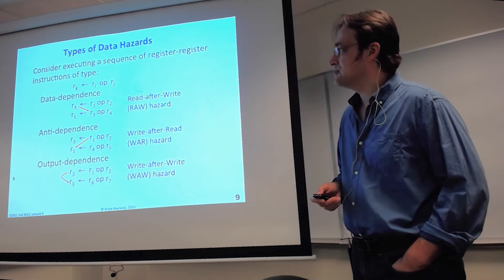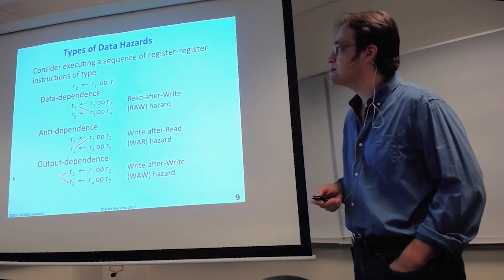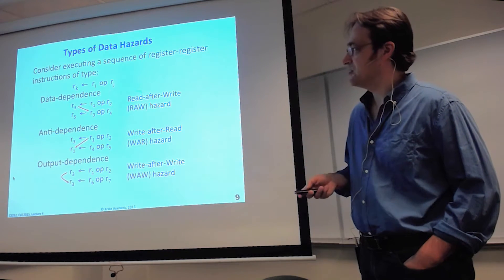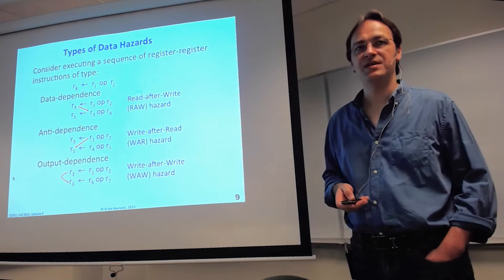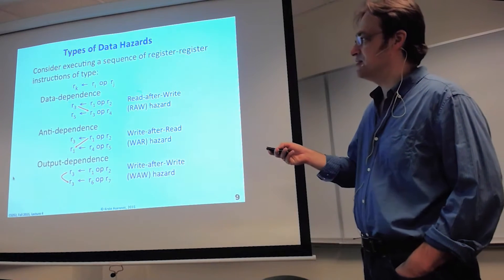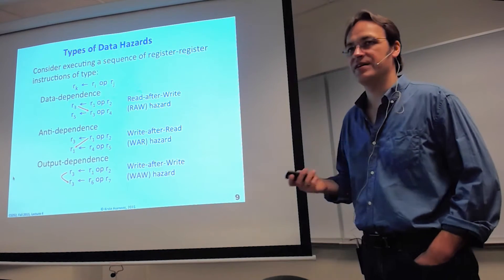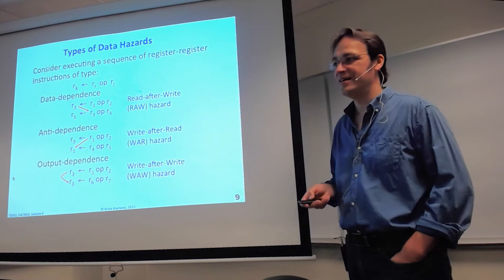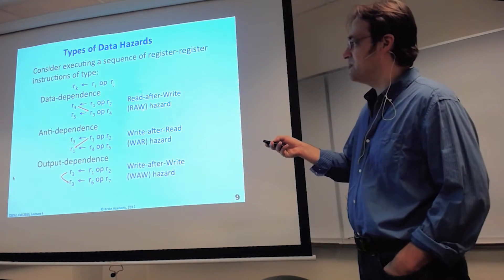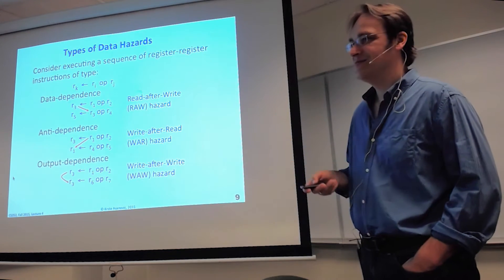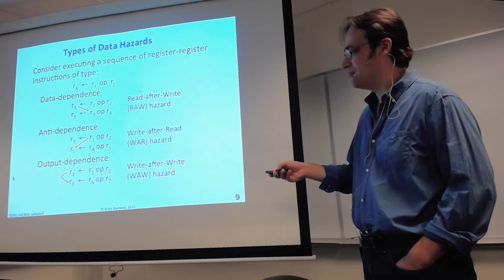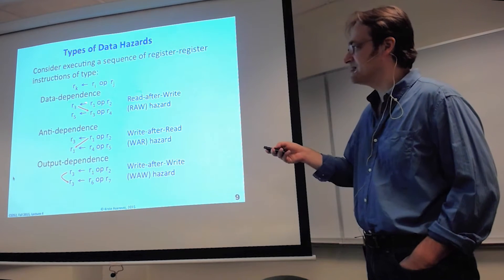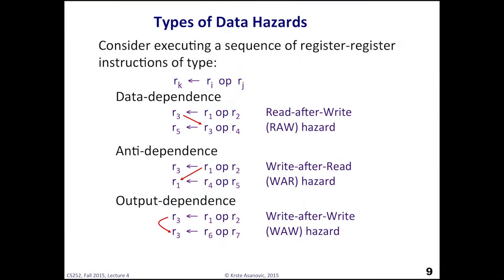Data hazards are the next class. There are different naming conventions: architects use read-after-write (RAW), write-after-read (WAR), and write-after-write (WAW); compiler writers use data dependence, anti-dependence, and output dependence. The architects' naming is simple and methodical: read-after-write means the read should happen after the write; write-after-read means the write should happen after the read; write-after-write means the second write should happen after the first. These are the terms used in this class.